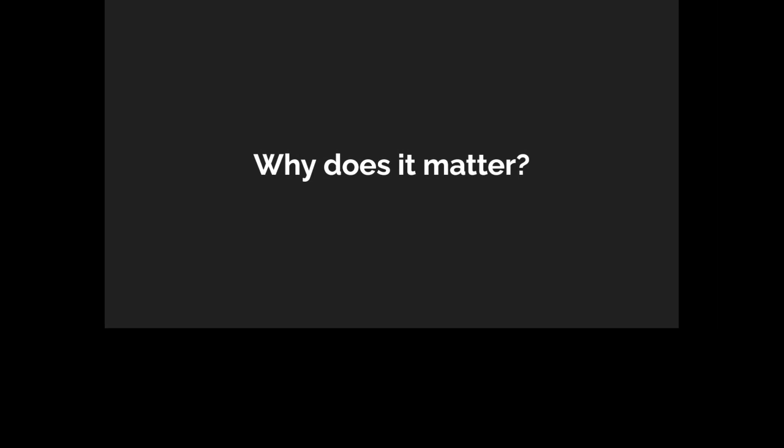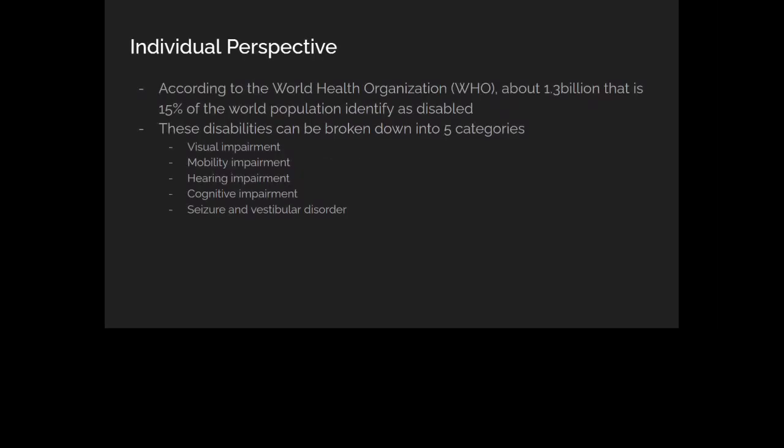The most important one is the individual perspective. According to the World Health Organization, we have 1.3 billion people — about 15% of the world population — that currently identify as disabled. That's a very big number, and it has huge implications for businesses. These disabilities can be broken down into five or six categories: visual impairment, mobility impairment, hearing impairment, cognitive impairment, seizure and vestibular disorder. We're going to look at each one and how a poorly designed product can affect these people.